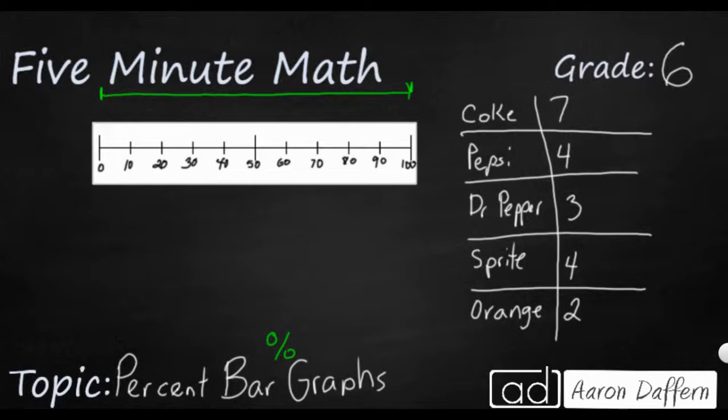And so how we change these numbers into percents is we do two things. First, we figure out the total. How many total people responded to this survey that we had here? And our answer is 20.